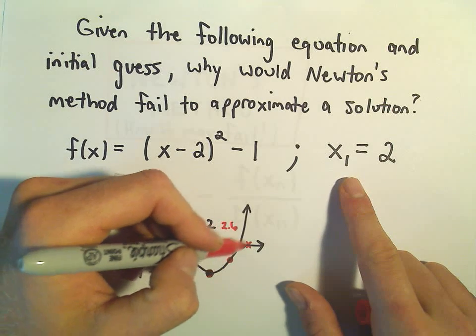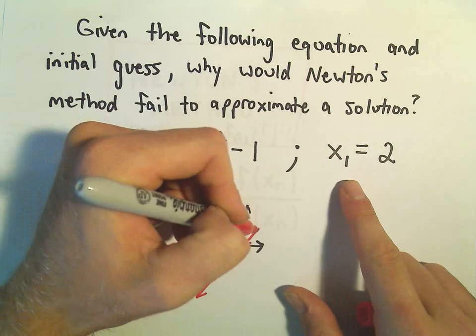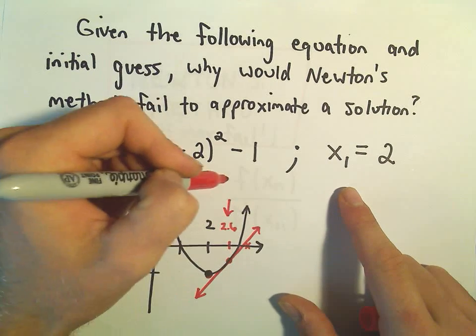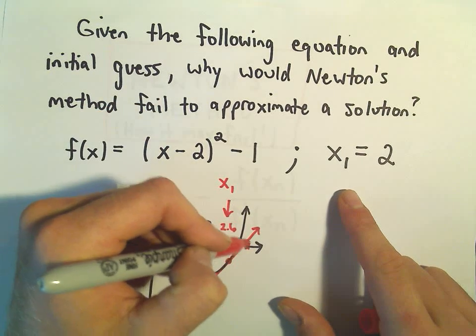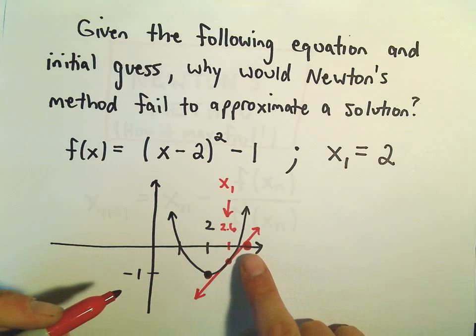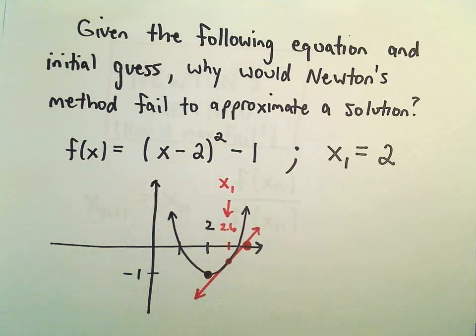So 2.6, I'm going to get a tangent line that looks something like that. So if 2.6, if that was my first guess, this x-intercept - Newton's method, that's what it actually does. It picks out the x-intercept.